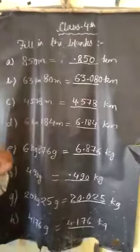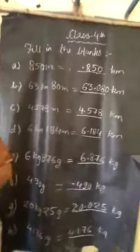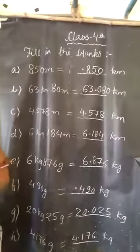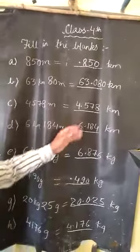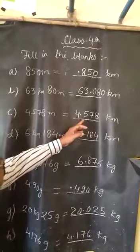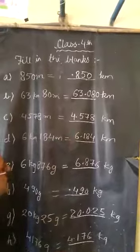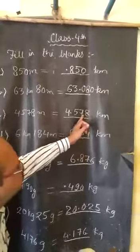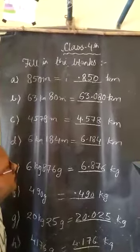Here, question number C: 4578 meters. Then we divide it by 1000 as usual. After dividing by 1000, we get 4578 numerator without changing. Then we insert decimal after 3 digits from right side: 1, 2, 3. Then it will be changed into 4.578 kilometers.